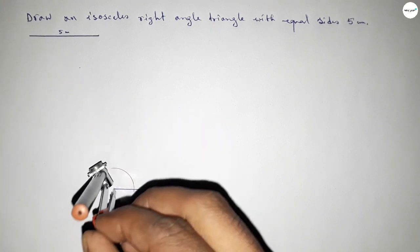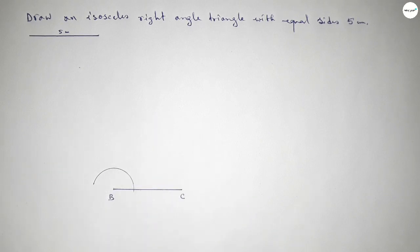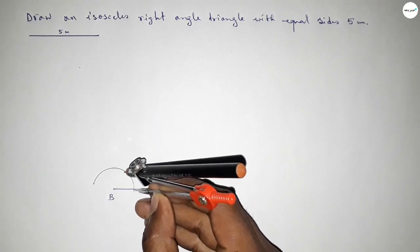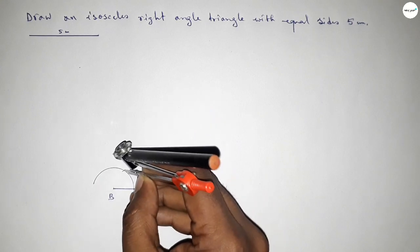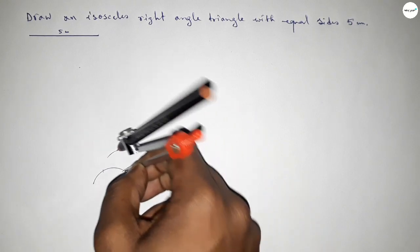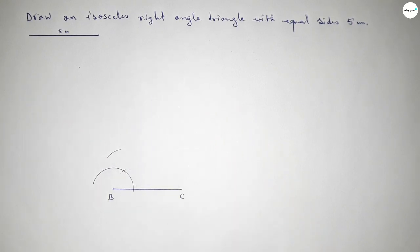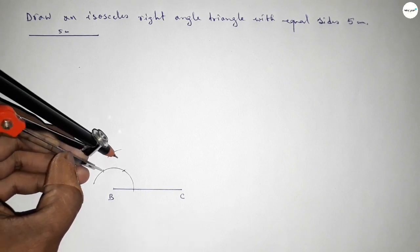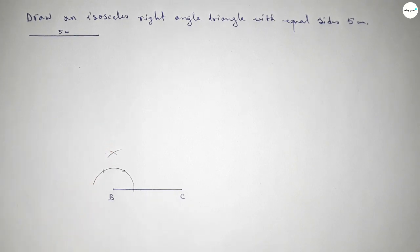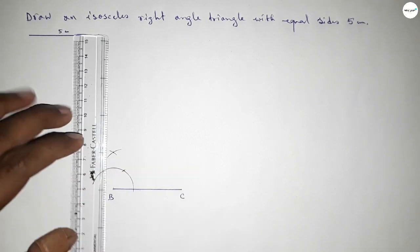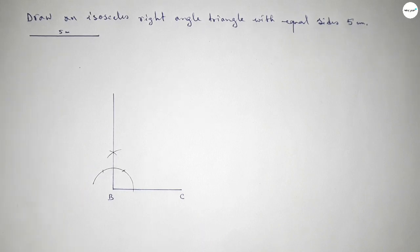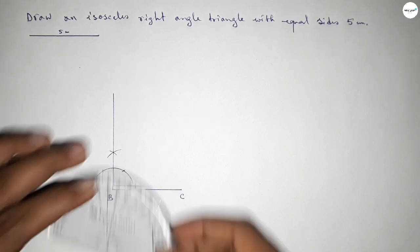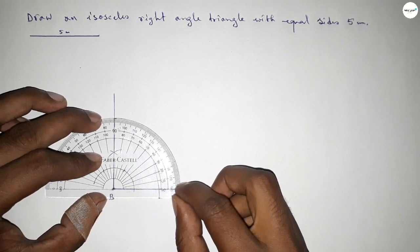Now with the same length, putting the compass here and cutting an arc. Again with the same length, putting the compass here and cutting here, then drawing an arc. With the same length, putting the compass here and cutting — so both curves intersect at a point. Now joining this side to get the 90 degree angle. Checking whether it is 90 degrees — this is perfectly 90 degrees.